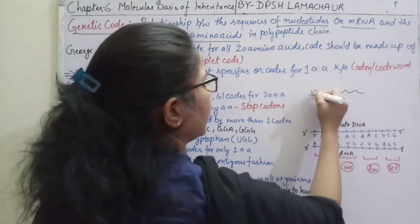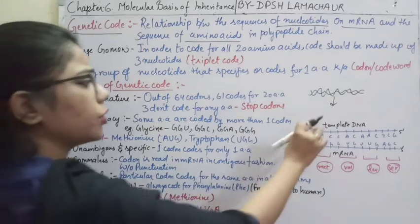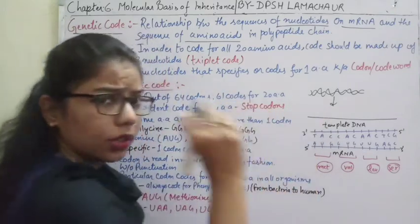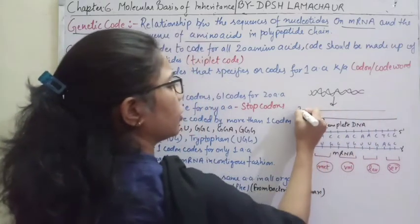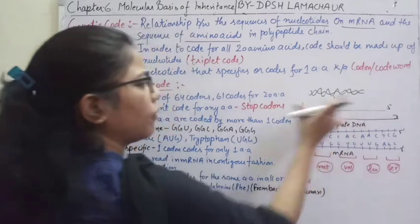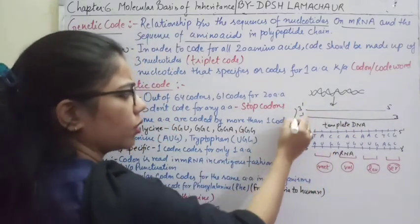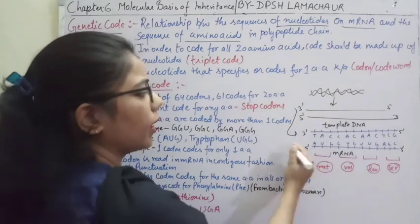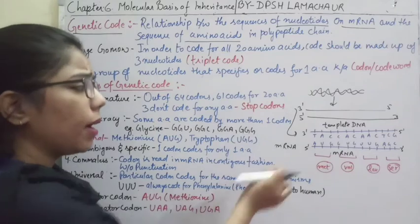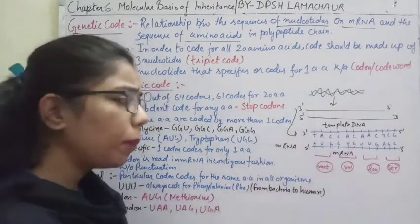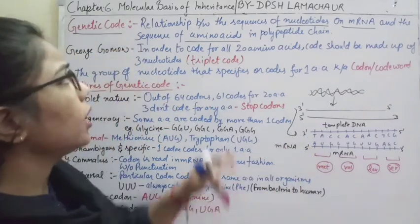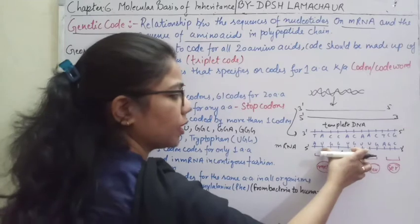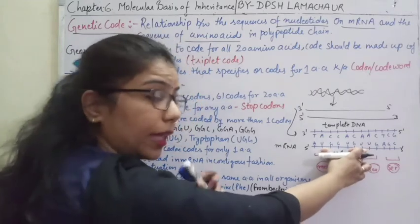Whenever we are going for transcription, from the template DNA there will be formation of mRNA. It is a DNA double helical structure having two strands, 3 prime to 5 prime and 5 prime to 3 prime. This one we have taken as the template strand. On the basis of complementary base pairing, the template strand will form the mRNA.